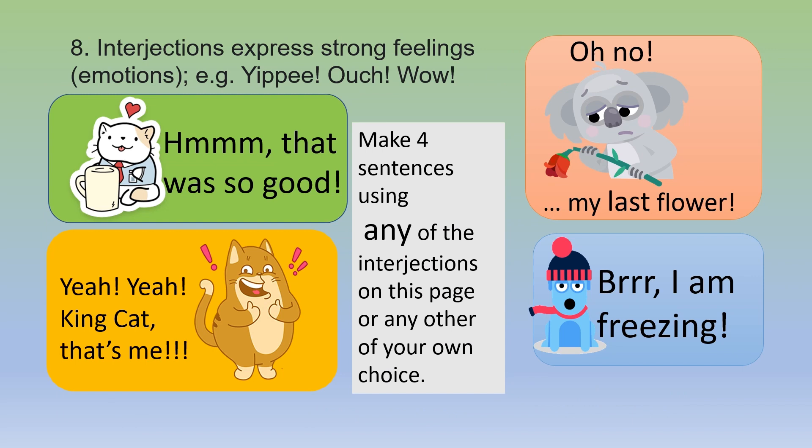Eight: interjections express strong feelings and emotions. For example, yippee, ouch, wow, hmm — that was good. Yeah yeah, king cat, that's me. Oh no, my last flower. Brrr, I'm freezing. Make four sentences using any of the interjections on this page or any other of your own choice.